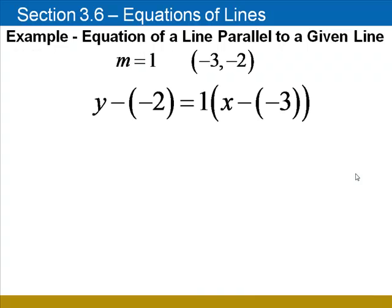Substitute into the point slope form: negative 2 for y1, 1 for the slope, negative 3 for x1.